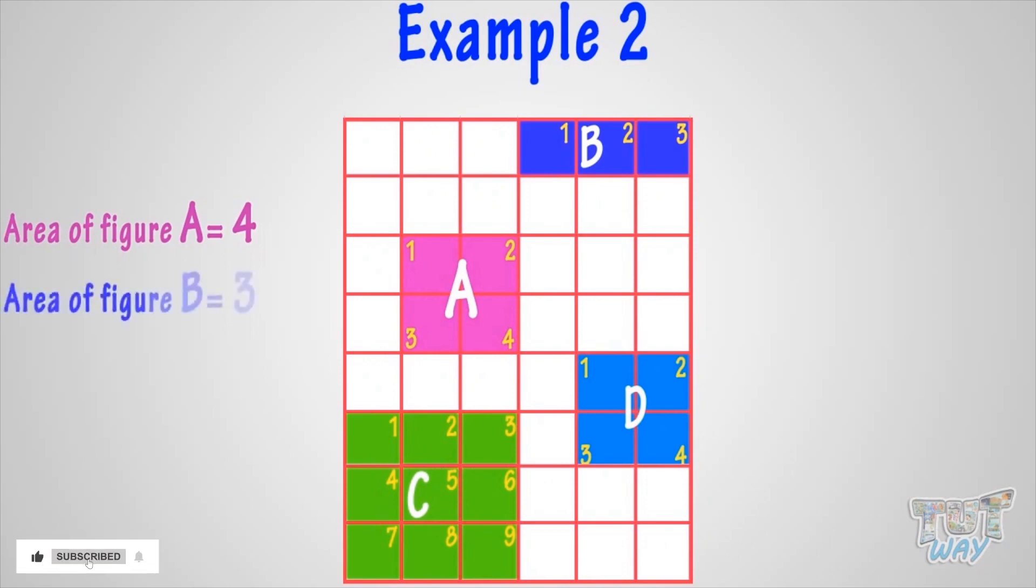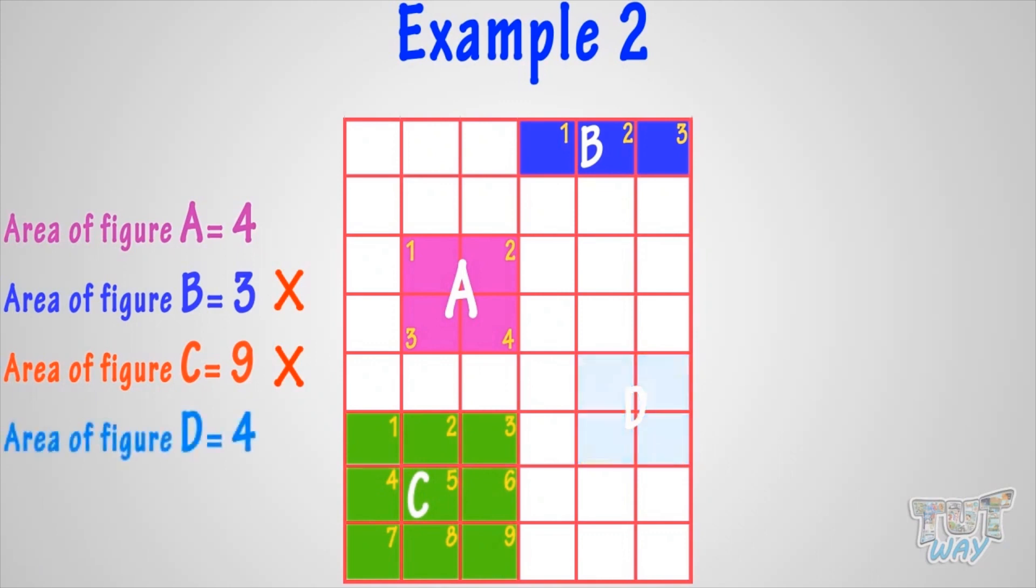Figure B has 3 squares. Figure C has 9 squares. Figure D has 4 squares.